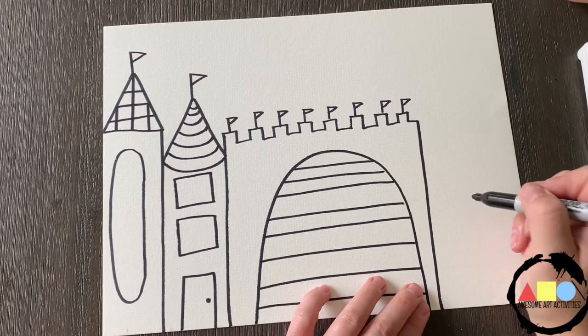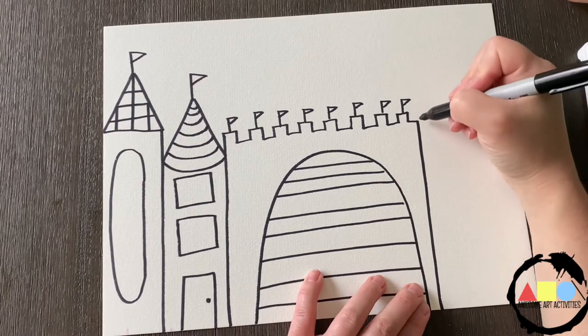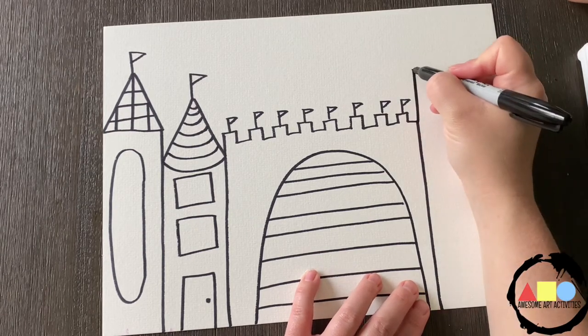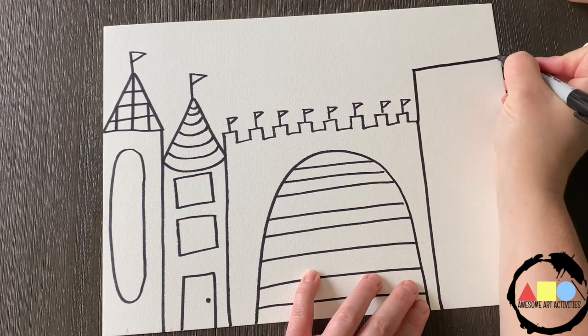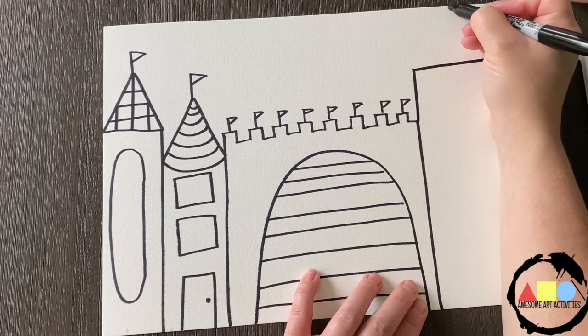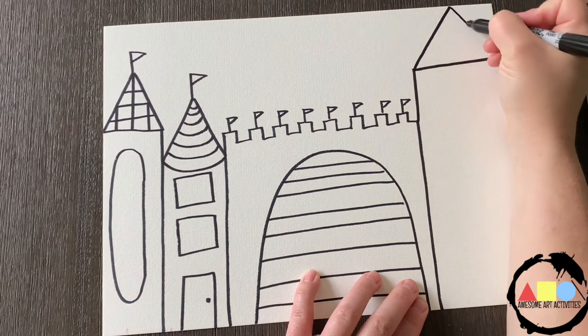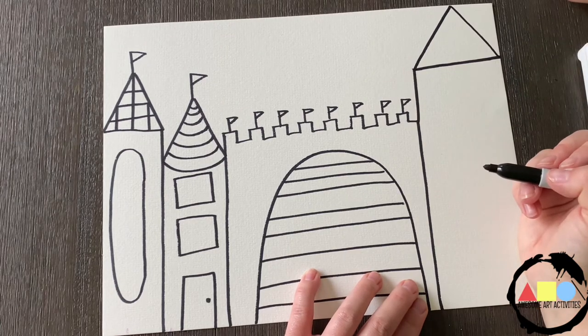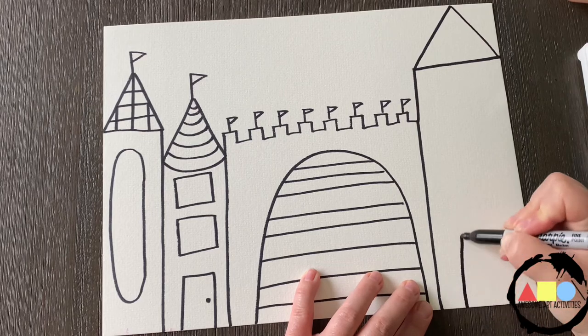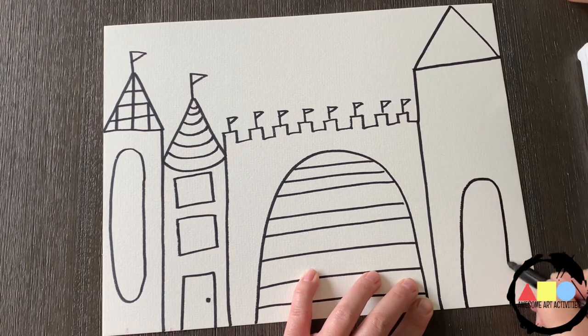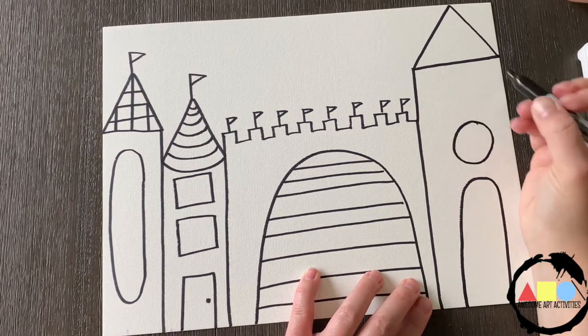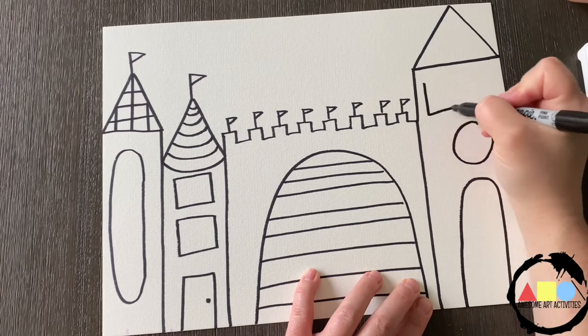Now we're going to draw one more building on this side. I'm going to make it a little taller. So I'm going to draw a vertical line right there. I'm going to go across to the side of my paper. Now, I'm going to add the triangle. It looks like I'm not going to have enough room for a flag on top of this one. Now, let's add our details here. We're going to do a big door, a circle window, and a rectangular window.